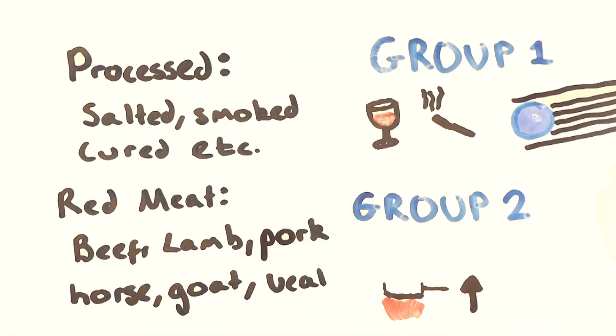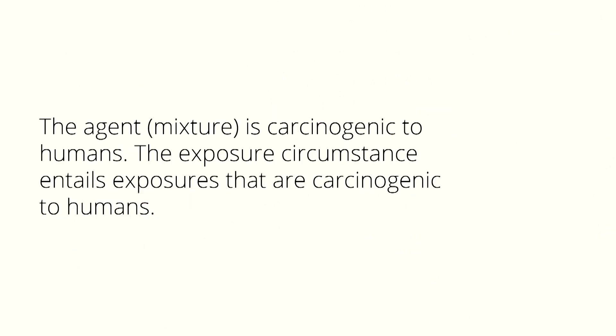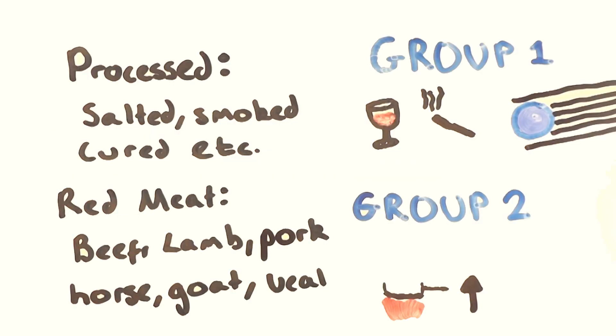Processed meat has been placed into group 1, which is defined as the exposure circumstance entails exposures that are carcinogenic to humans. Other things in group 1 are ethanol and alcoholic drinks, oral contraceptive pills in circumstances, solar radiation, the uses of sun beds, second hand smoking and smoking.